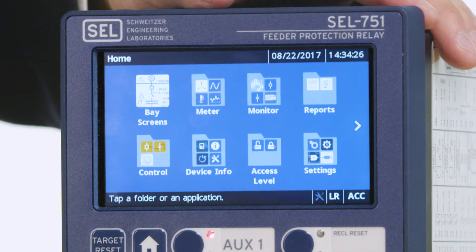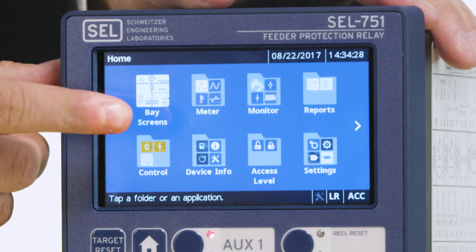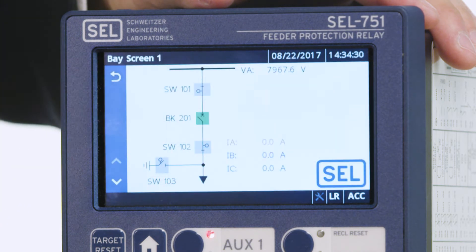To get started, the first application we'll take a look at today is the BaseScreens application. Here on the BaseScreens application, you can see a custom one-line diagram that I've created using an available software that comes with Accelerator QuickSet.